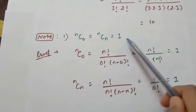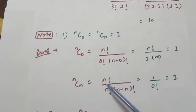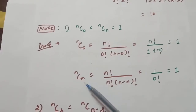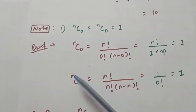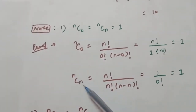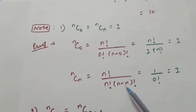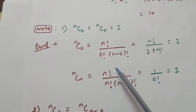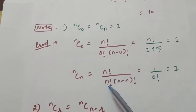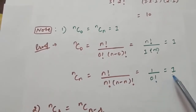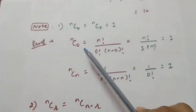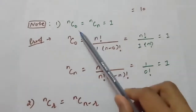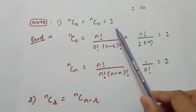Similarly, nCn is also 1 because nCn = n! / (n! × (n−n)!) = n! / (n! × 0!). Cancel n! with n! and since 0! = 1, you get 1. So the values of both nC0 and nCn are always 1.